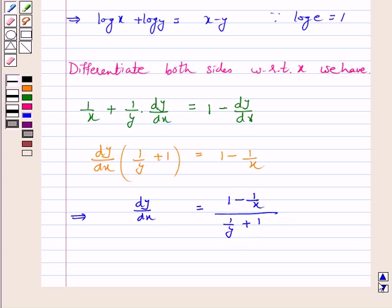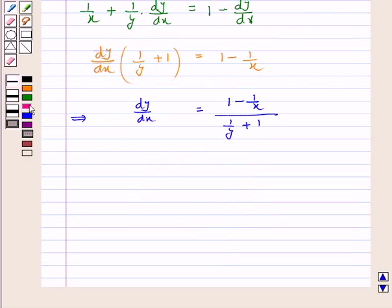This equals (x minus 1)/x times y/(1 plus y), which equals y(x minus 1) over x(y plus 1). So this is our dy/dx.